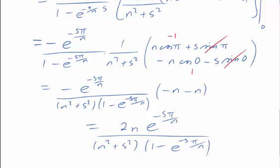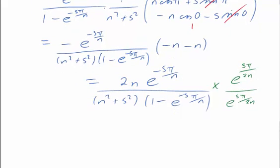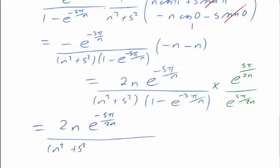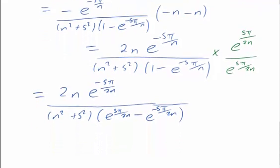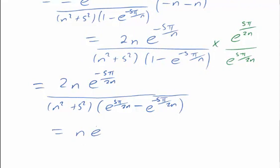I could leave it like this or if I wanted I could multiply top and bottom by the same factor chosen to make the bottom hyperbolic function. It works like this. Here's the factor. And so we end up with 2n. Now on top we've got e to the half s π over n times e to the minus s π over n, and on the bottom we've got n squared plus s squared and expanding the brackets, e to the s π over 2n minus e to the minus s π over 2n.